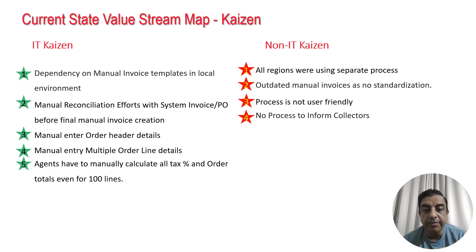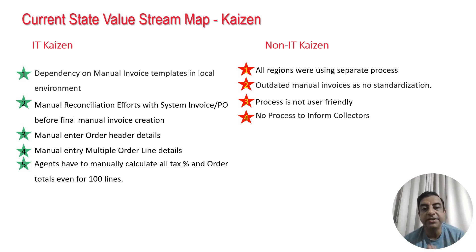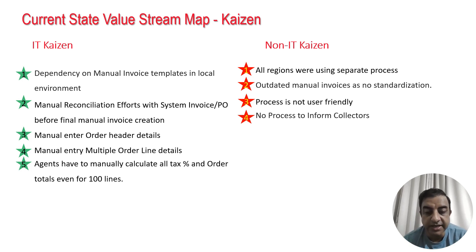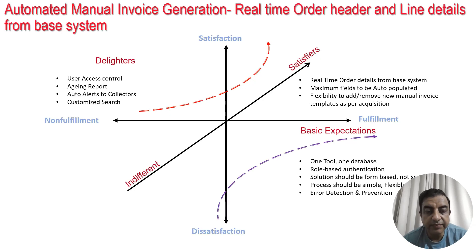The non-IT kaizens identified were: all regions using separate processes, outdated manual invoices with no standardization, a process that was not user-friendly, and no process to inform the collectors. These were all identified as non-IT kaizens.